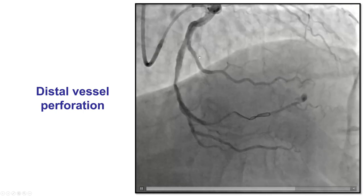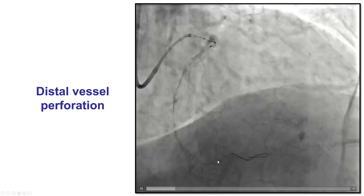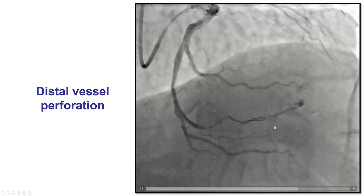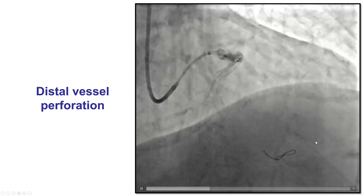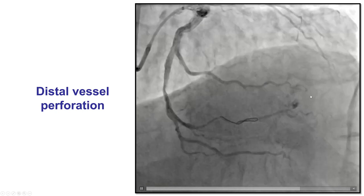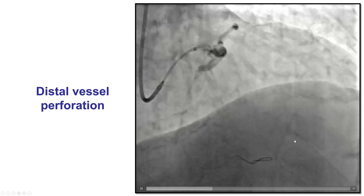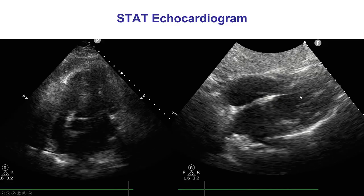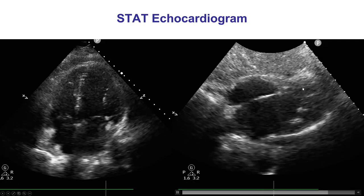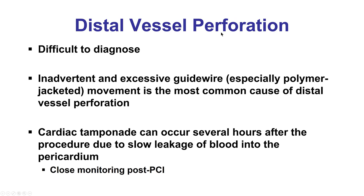In this particular case, we were eventually able to stent the lesion, but during delivery attempts there was significant movement of the guide wire, and even though this was a workhorse guide wire, at the end we did notice a distal vessel perforation. The wire likely entered into a small branch of the obtuse marginal branch, resulting in perforation. We did an echo that did not show any pericardial effusion, but distal vessel perforation may not cause massive bleeding and may lead to tamponade even several hours after the procedure, because bleeding into the pericardium can be very slow. The most common cause of distal vessel perforation is inadvertent and excessive guide wire movement distally.